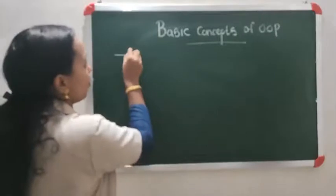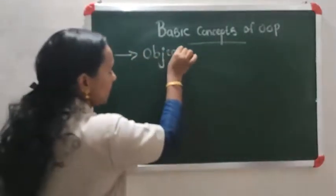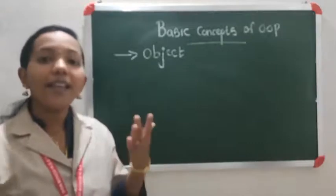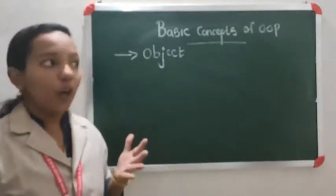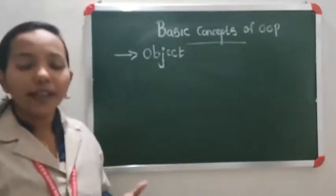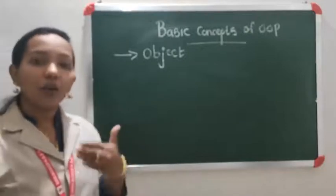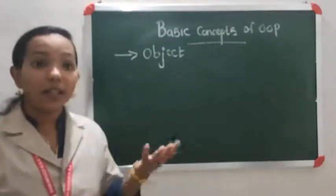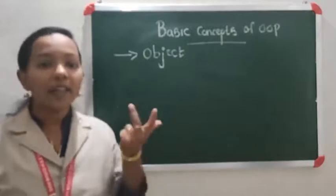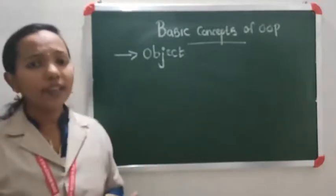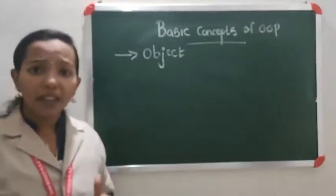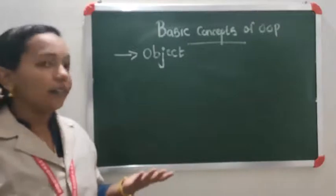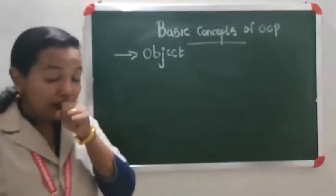The first basic concept of object-oriented programming is object. Any real-life example or any incident — anything we can treat as an object. For example, we can consider a student as an object. It has its own characteristics and behavior. A student's characteristics include student name, height, mark, and which class the student is studying. The functions or behavior include reading, playing — these are all the activities students are doing.